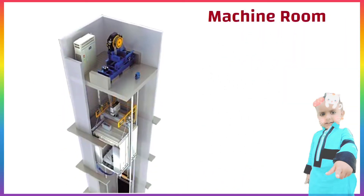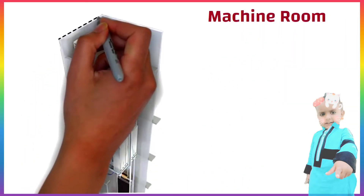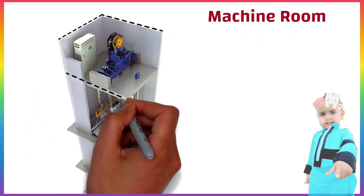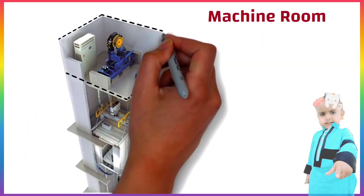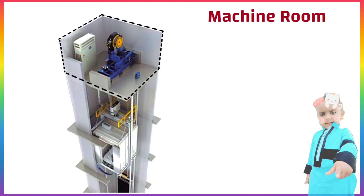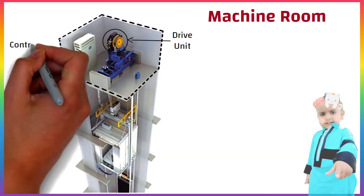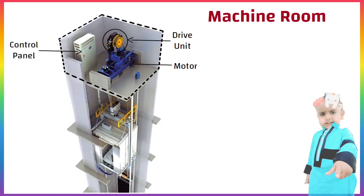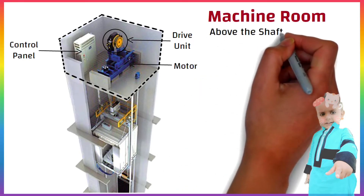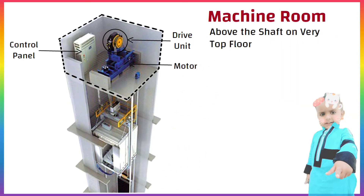Machine Room is a special room accessible only to authorized persons, which contains the lift drive unit, control panel and motor. It is often placed above the shaft on the very top floor. The machine room is an integral part of the elevator.